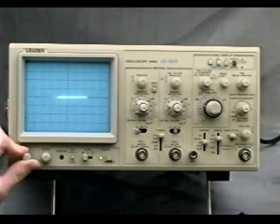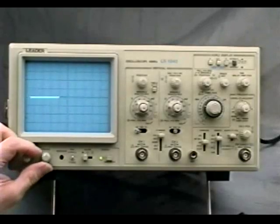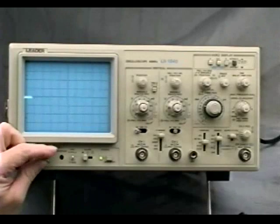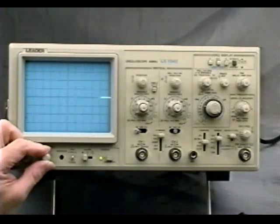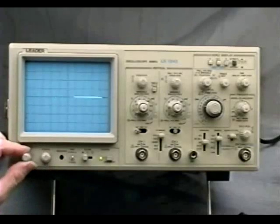Advance the intensity control to make the trace visible on the screen. For the best measurement accuracy, keep the trace intensity down to the minimum level necessary. Using the focus control, adjust for the sharpest trace possible.